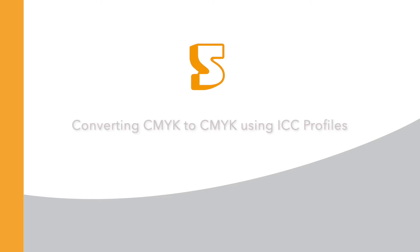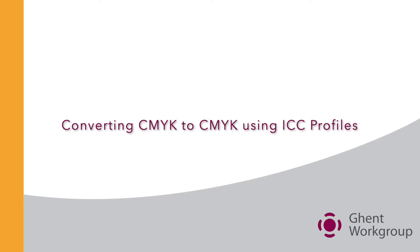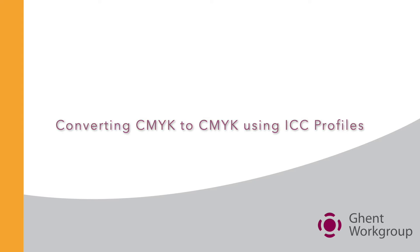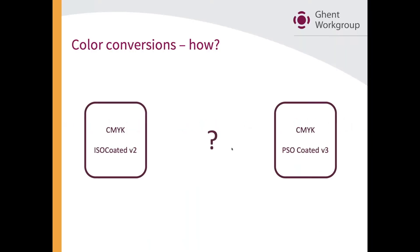Let's talk about something other than text for a change. Going to color doesn't necessarily make things easier, but another question that comes up a lot — where we see things happen that maybe shouldn't happen — is conversion of CMYK to CMYK. How do you do that? The generic problem is: I have one type of CMYK and I want to convert to another type of CMYK.